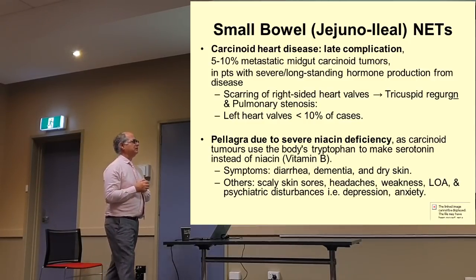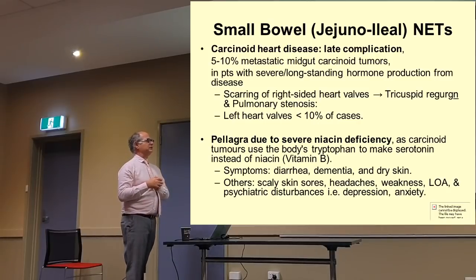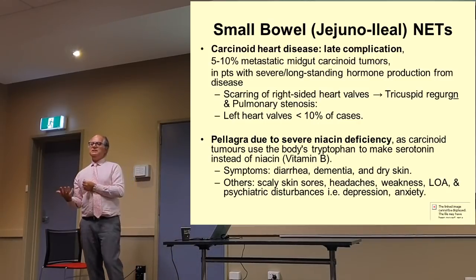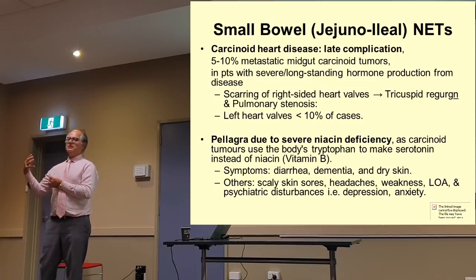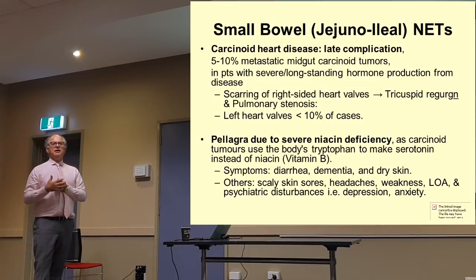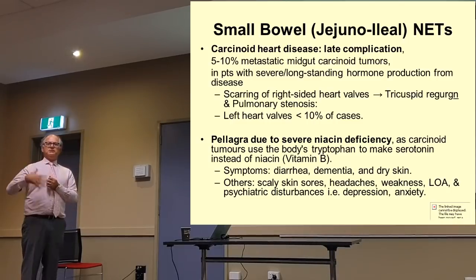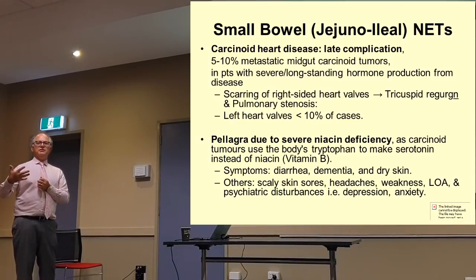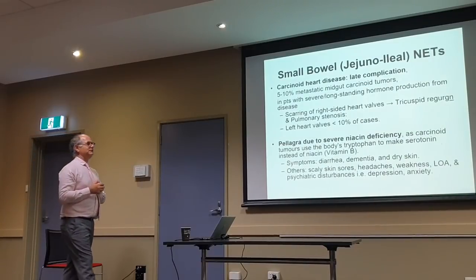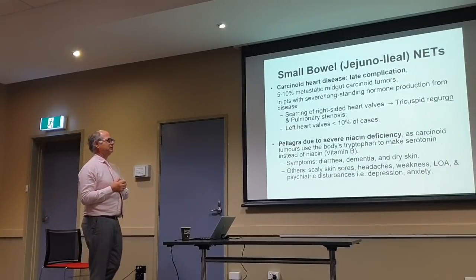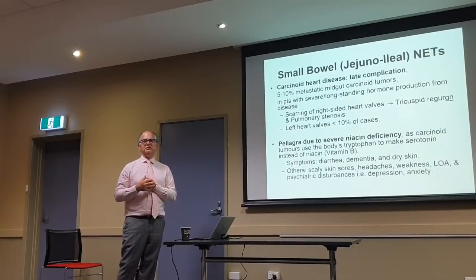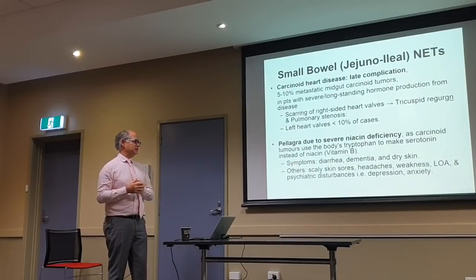There's also a skin condition caused by carcinoid syndrome called pellagra, where the body needs niacin for growth and development. Because the tumour produces a lot of serotonin, it wastes a lot of the niacin, so the body has a severe niacin deficiency causing pellagra. It causes diarrhoea, dry skin, and sometimes dementia as well.